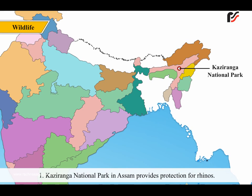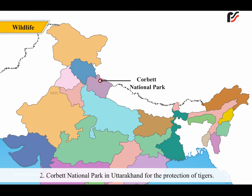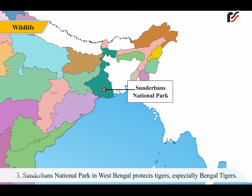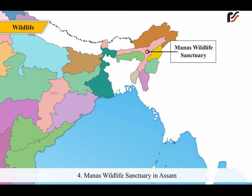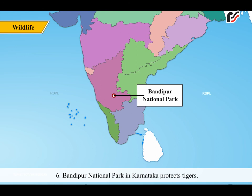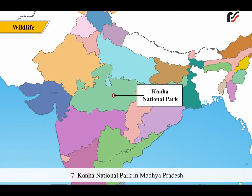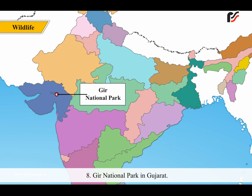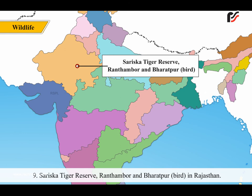Some of them are: 1. Kaziranga National Park in Assam, which provides protection for rhinos. 2. Corbett National Park in Uttarakhand for the protection of tigers. 3. Sundarbans National Park in West Bengal, which protects tigers, especially Bengal tigers. 4. Manas Wildlife Sanctuary in Assam. 5. Periyar Wildlife Sanctuary in Kerala. 6. Bandipur National Park in Karnataka, which protects tigers. 7. Kanha National Park in Madhya Pradesh. 8. Gir National Park in Gujarat. 9. Sariska Tiger Reserve, Ranthambore and Bharatpur Bird Sanctuary in Rajasthan.